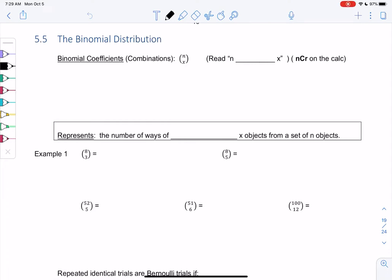Welcome to 5.5. We're going to learn this new distribution called the binomial distribution. Distribution, remember, means shape. It tells us the pattern of the data. But we're going to do some new definitions and calculator stuff before we get in there.